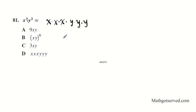We have x times x times x — three copies of x — multiplied by y times y times y — three copies of y. So our answer is option letter D.